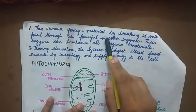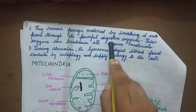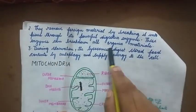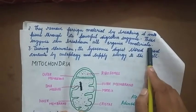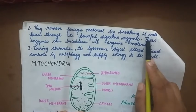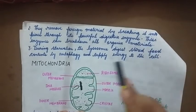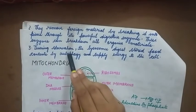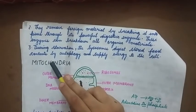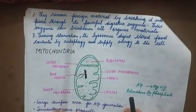Lysosomes remove foreign material by breaking it into pieces through their powerful digestive enzymes, which can break down all organic material. During starvation, lysosomes digest stored food content through autophagy and supply energy to the cell.